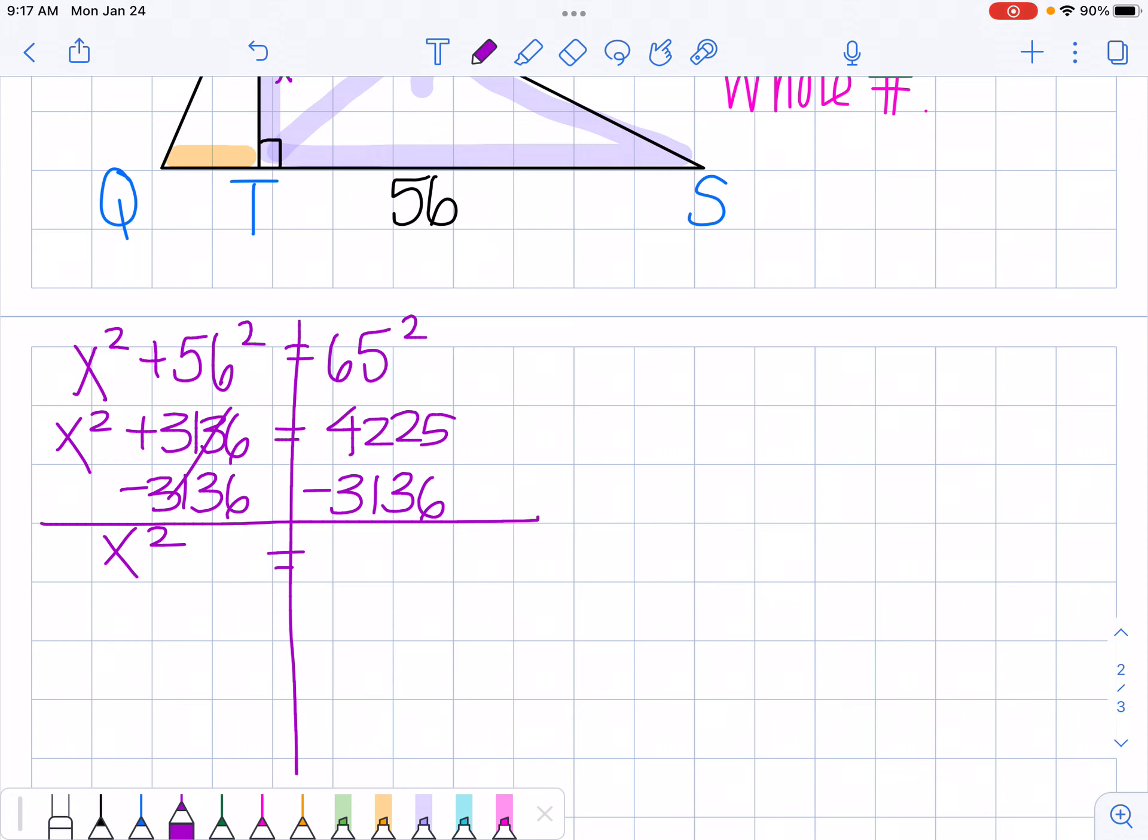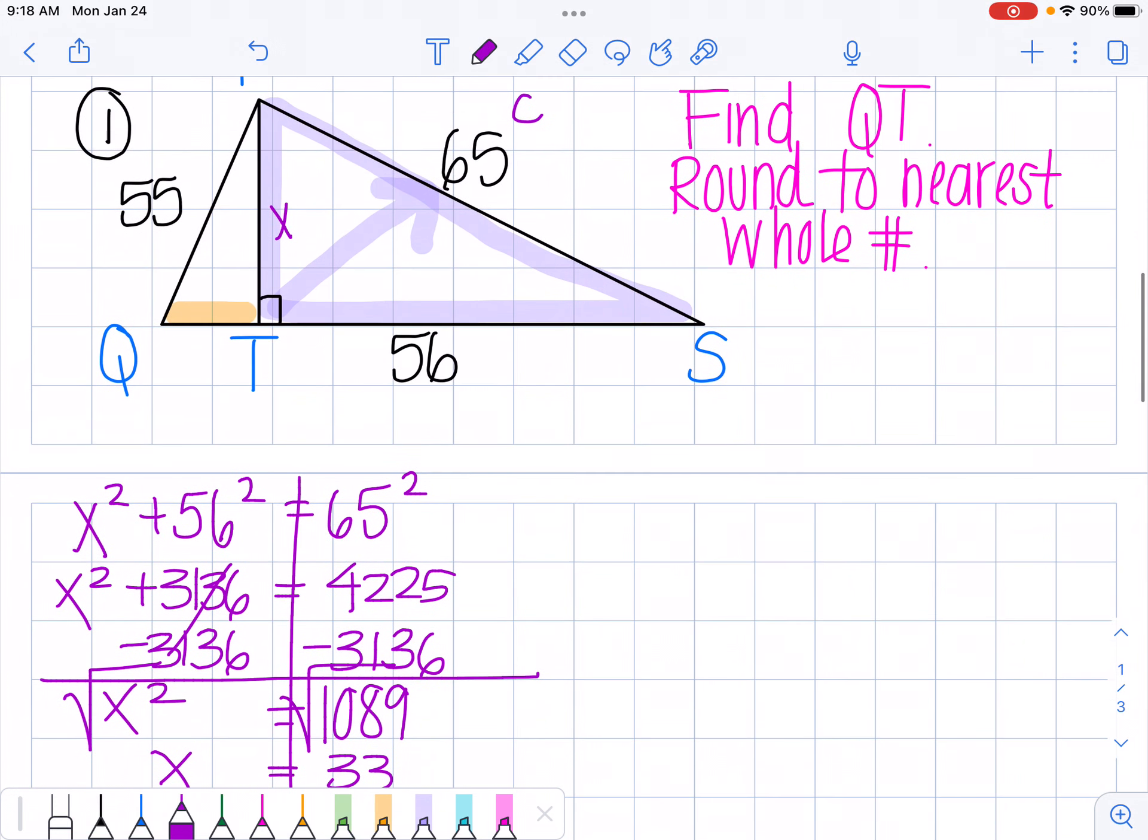This gives me 1089, and I'm going to square root both sides to cancel out my square. So I'm left with x is equal to 33. Okay, so that means that this side right here is 33.